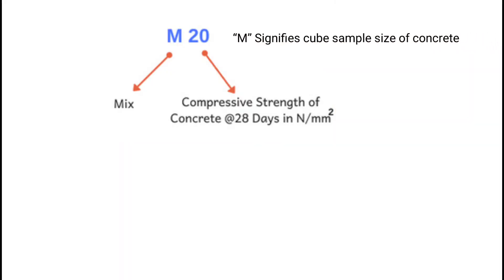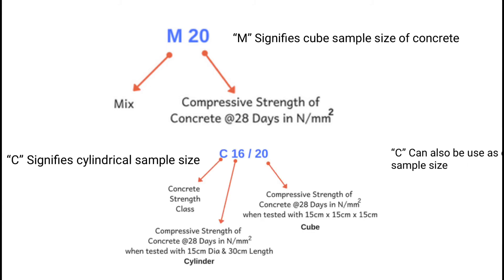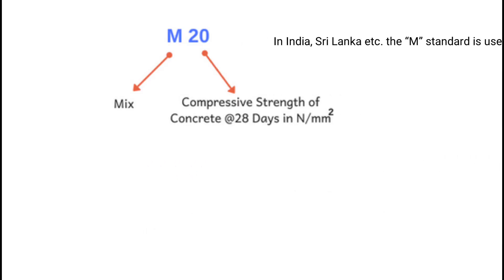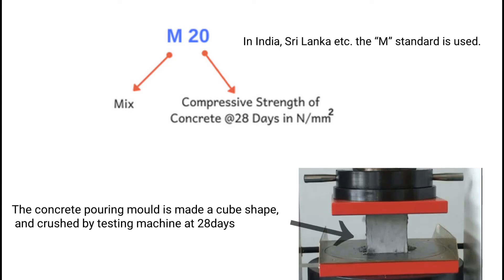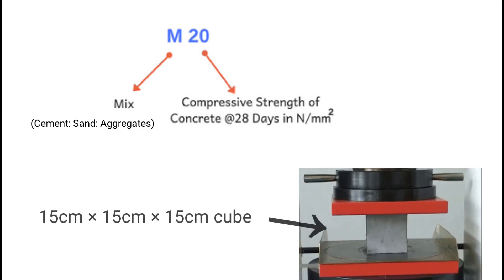The M standard signifies cube sample size of concrete, while the C standard signifies cylindrical sample size of concrete. C can also be used as cube and cylindrical sample size. In India, Sri Lanka, etc., the M standard is used. M20 stands for compressive strength of concrete at 28 days in newton per millimetre square, when tested with a 15 cm × 15 cm × 15 cm cube.